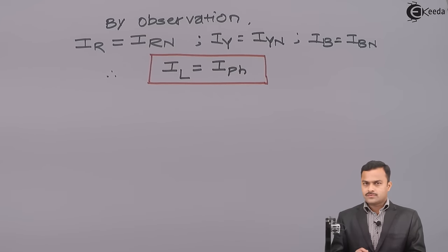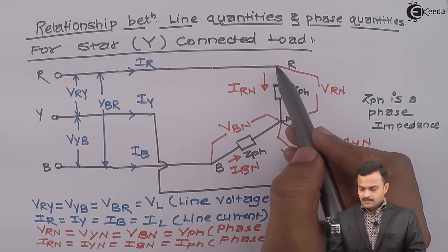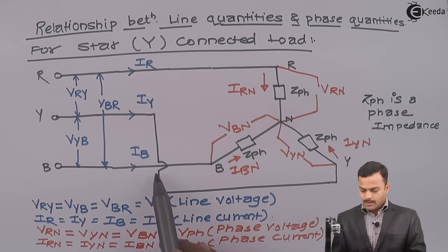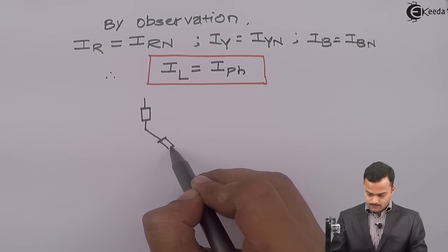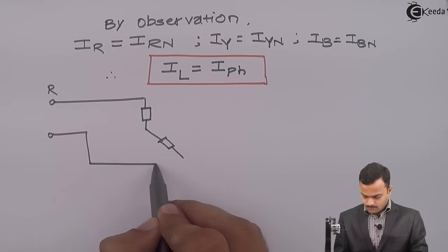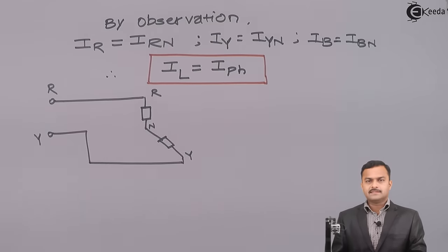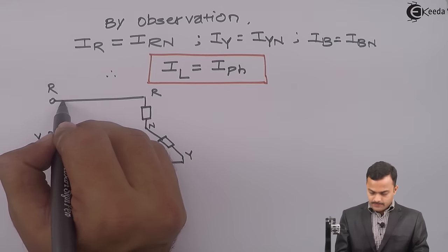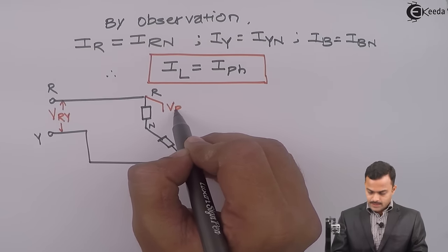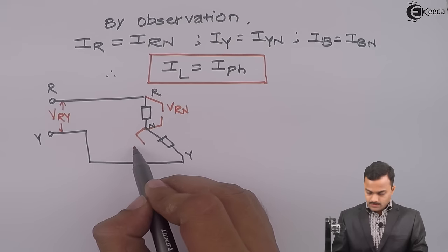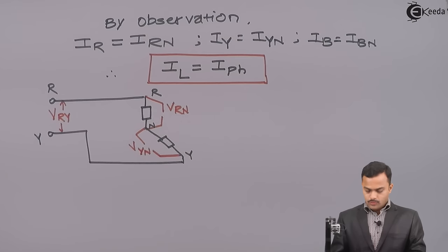Now I need to establish a relationship between line voltage and phase voltage. For that purpose, I will consider a small circuit starting from R, going through the RN phase, then the NY phase, and back to Y. In this circuit, the RN phase and YN phase each have phase impedance ZPH. The line voltage is VRY and the phase voltages are VRN and VYN.